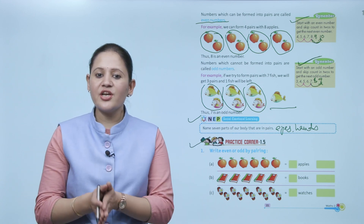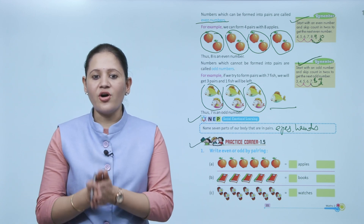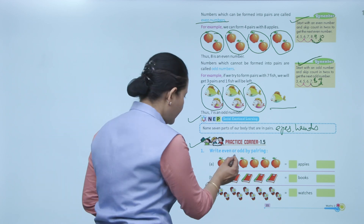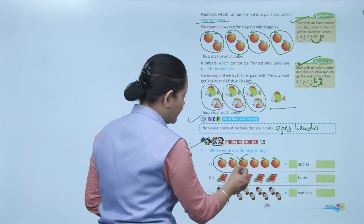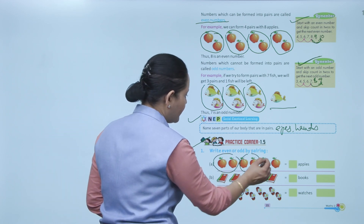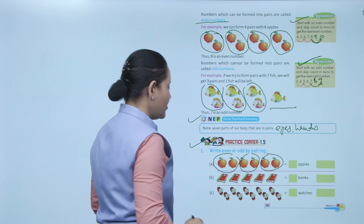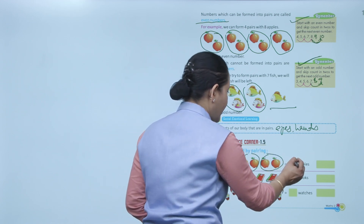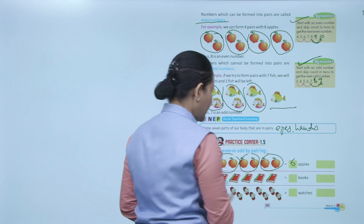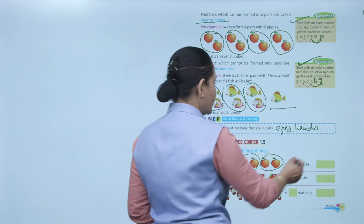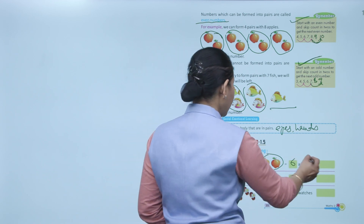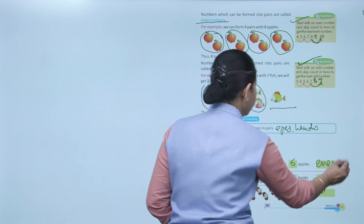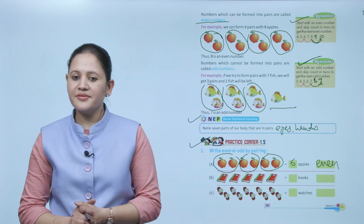Next: Practice Corner 1.5. Write even or odd by pairing. There are a total of six apples — we can make three pairs, so six apples are even. Clear.